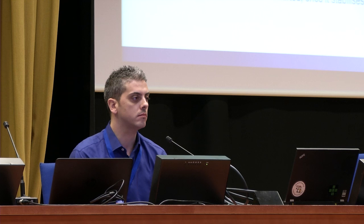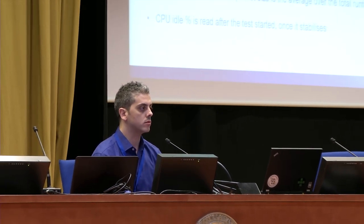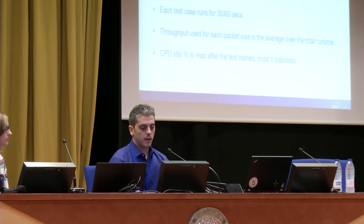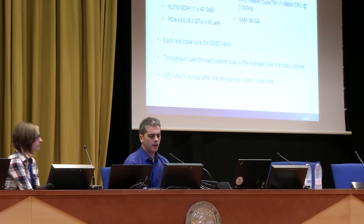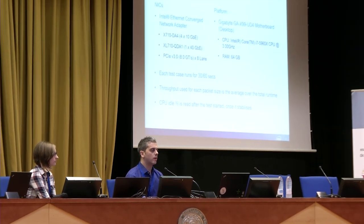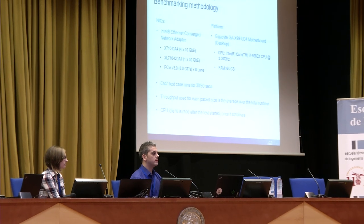Briefly on the setup: we used a high-end desktop that looks more like a server — a 3 GHz CPU with 64 GB of RAM. We used the i40e Intel network card, also known as Fortville. We used two form factors of the network card: the 4x10 gigabit and the 1x40 gigabit.